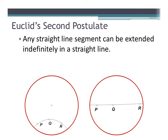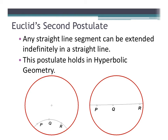Let's take a look at Euclid's second postulate: any straight line segment can be extended indefinitely in a straight line. If you look at line segment PQ, we could extend line PQ through point R, and beyond point R it would still continue infinitely because the edges of the Poincaré disk never end. Likewise, if you extend it to the left, it would still move on indefinitely. So Euclid's second postulate holds in hyperbolic geometry, and the same can be said for any line on the Poincaré disk.